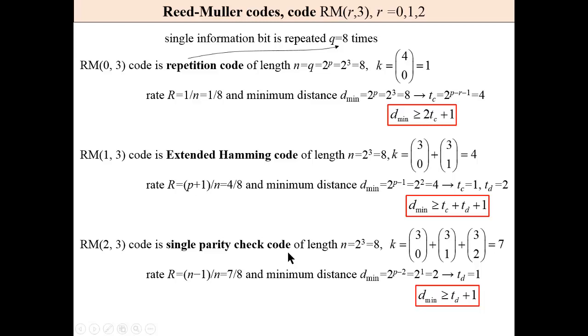For example, if P is 3 and R equal to 0, we have a repetition code where a single information bit is repeated Q equal to 8 times.